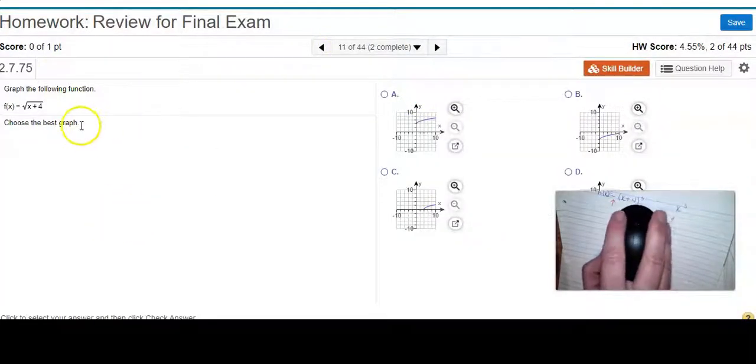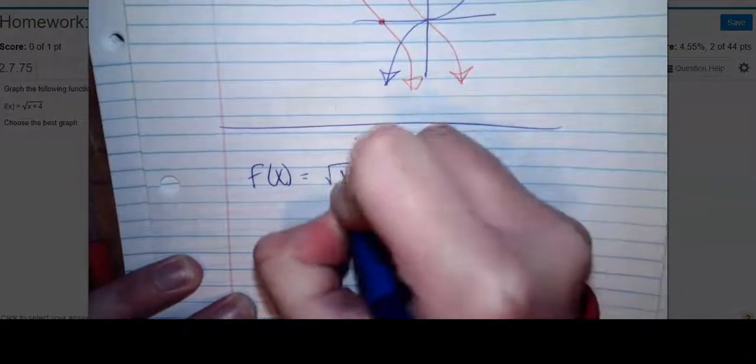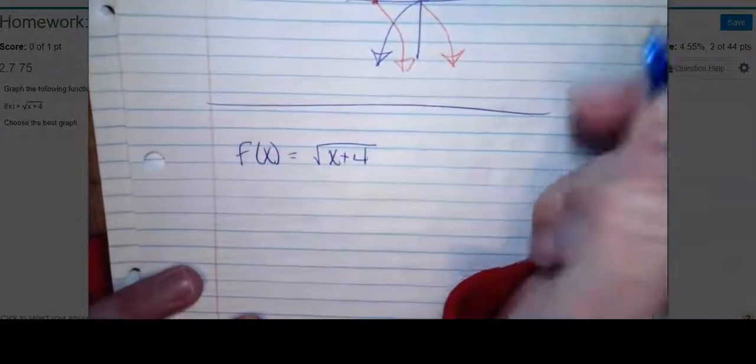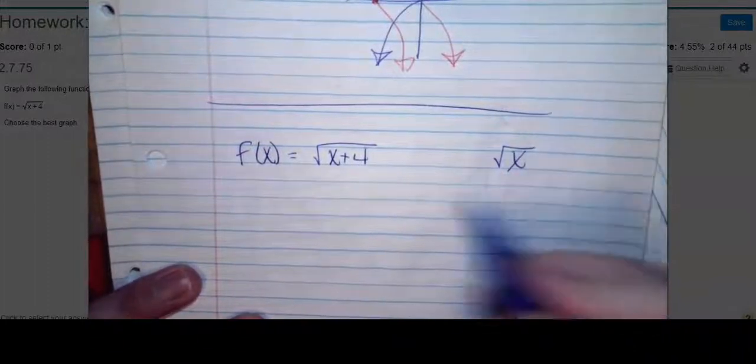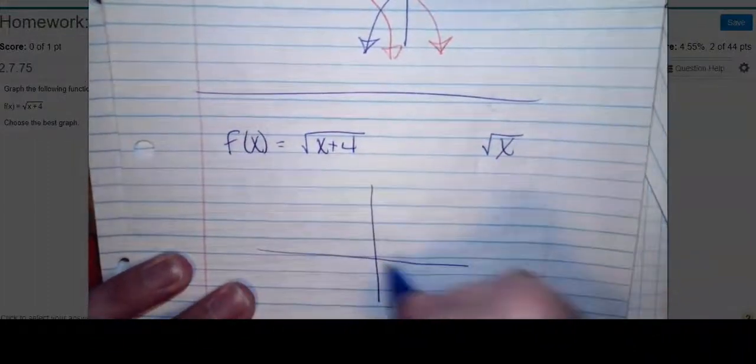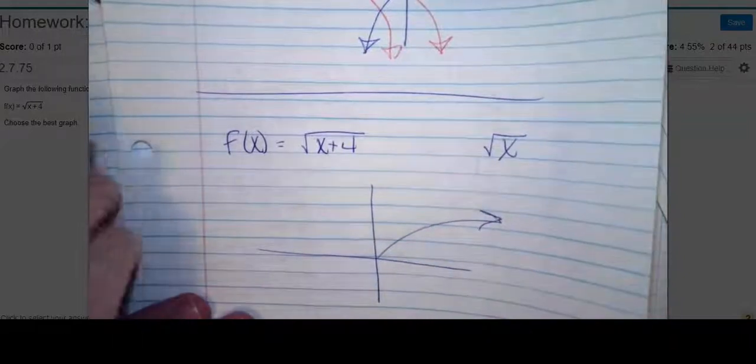Let's try another one. Graph the following function. My parent function is f(x) = √(x+4). Where's your variable? It is under an even root. So that's your parent function. What does it look like? It looks like this.